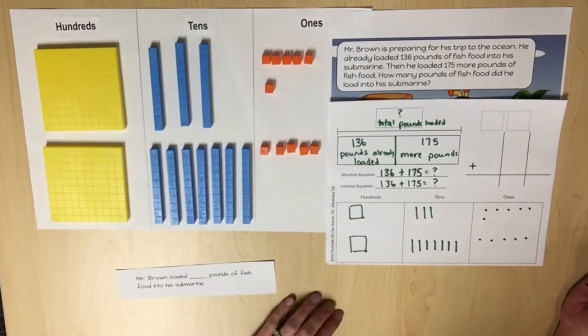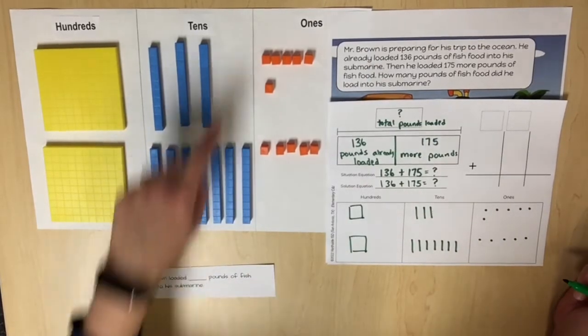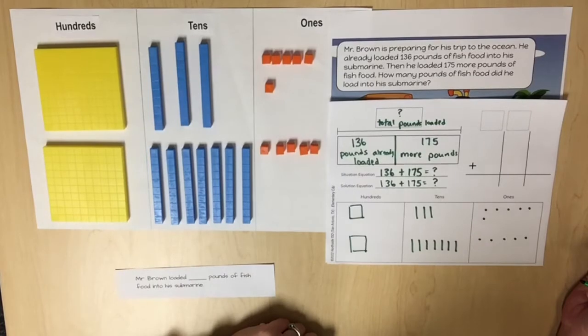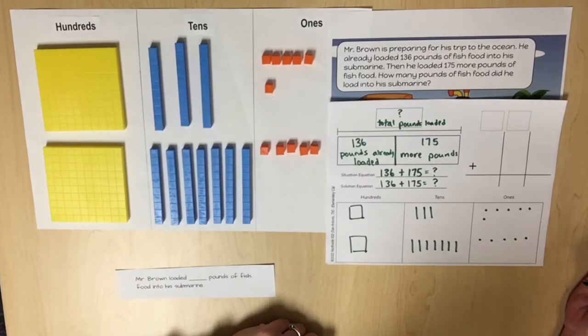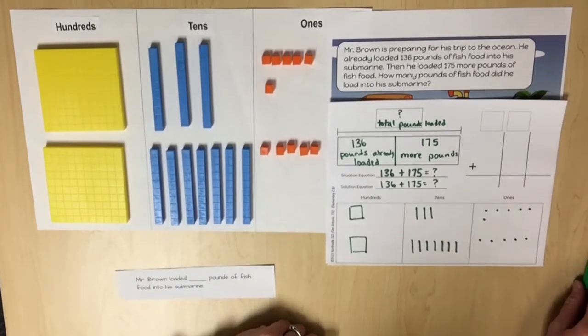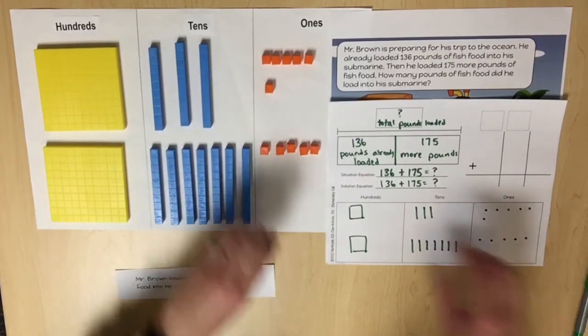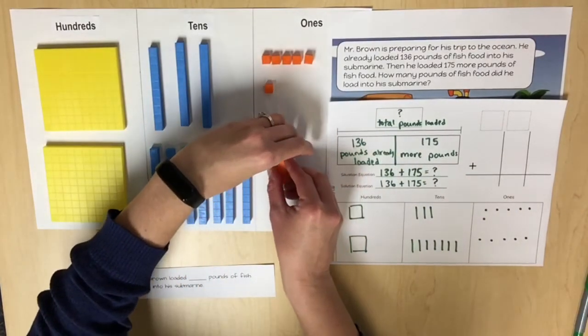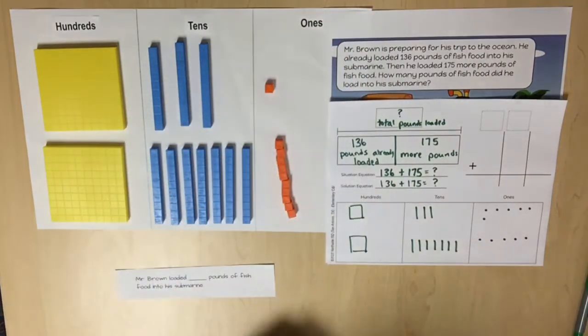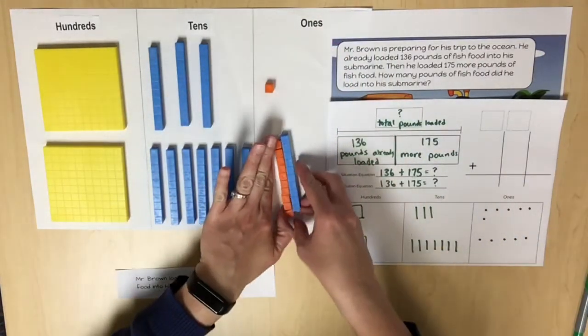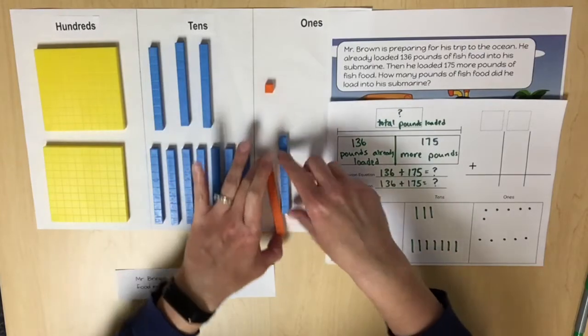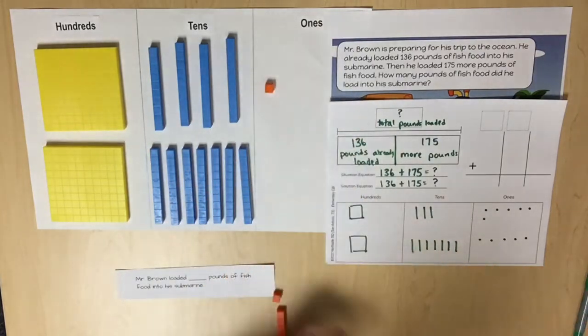Ask students to consider the ones place. There are 11 ones. Are there enough ones to compose a 10? Model how to regroup 10 ones by showing that 10 ones are equivalent to a 10. So students will regroup 10 ones for a 10.